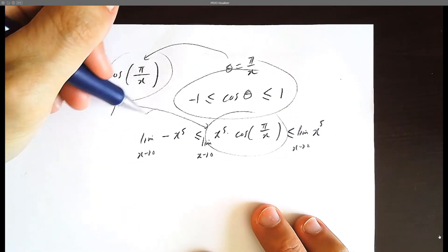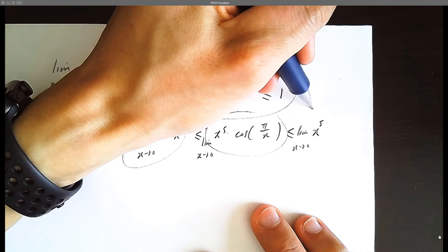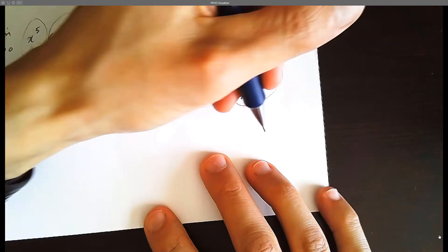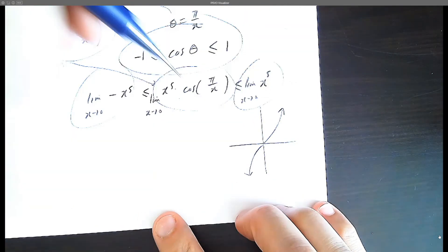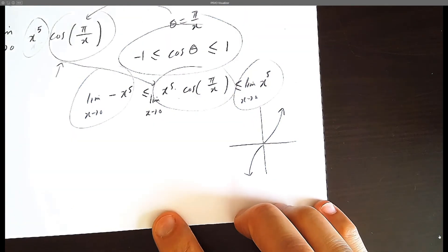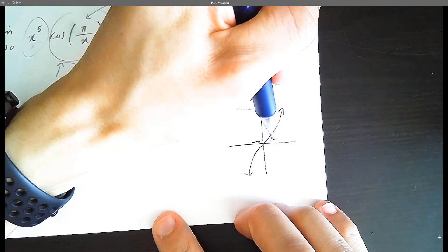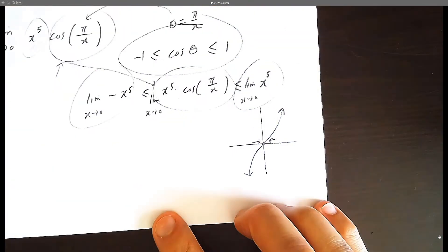Now what do we know about this x to the 5 graph? x cubed, x to the 5, x to the 7—this is an odd function that looks like this. And we know that as x approaches 0 from the left and the right, the limit happens to be 0.